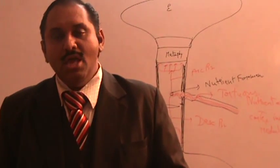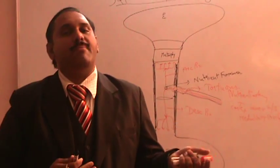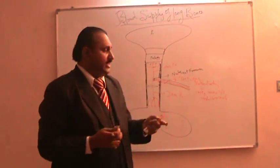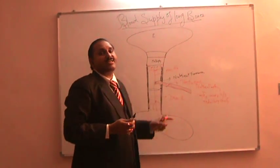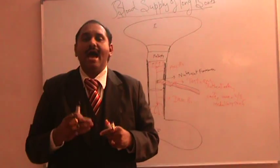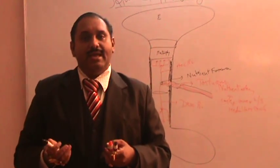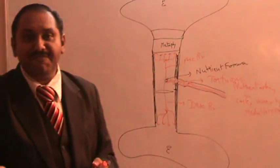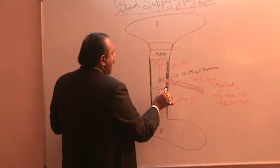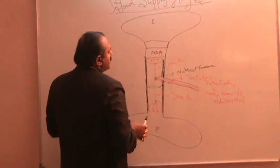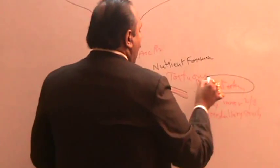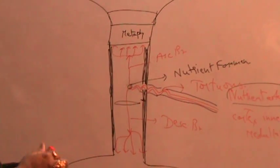The entire medullary cavity is also referred to as the bone marrow. There are two types of bone marrow: red bone marrow and yellow bone marrow. In a newborn baby, there is predominantly red bone marrow where hematopoiesis — production of red blood cells — occurs. As the child grows, some bones have their red marrow replaced by yellow, fatty bone marrow.